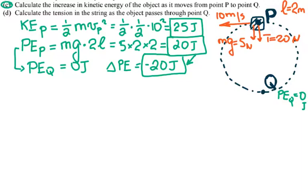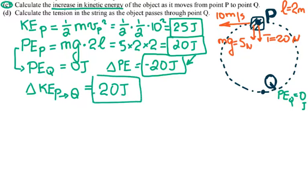And because potential energy has lost 20 joules, that means it went to the kinetic energy. So the change of the kinetic energy from P to Q increased by 20 joules. They ask you to calculate the increase of kinetic energy. So the change of the kinetic energy is equal to 20 joules. The total kinetic energy at Q is equal to 45 joules, it's the initial plus the one that it gained. But they ask you only by how much it increased, so it increased only by 20 joules.